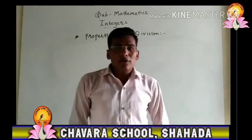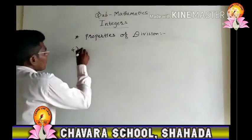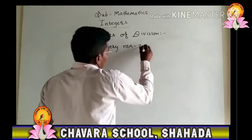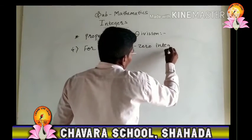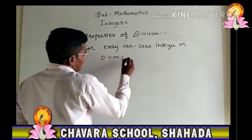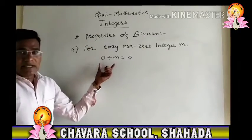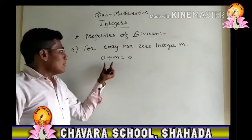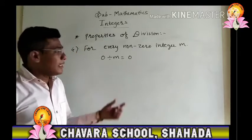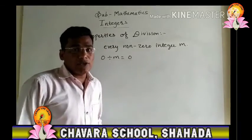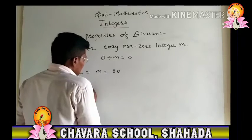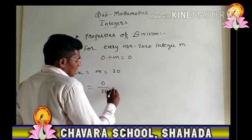The next property is: for every non-zero integer m, 0 divided by m equals 0. If 0 is in the dividend position and the integer is in the divisor position, the answer is always 0. For example, if m equals 20, then 0 divided by 20 equals 0.